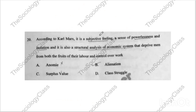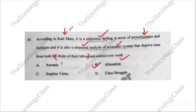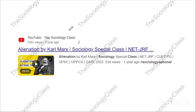Question number twenty: According to Karl Marx, it is a subjective feeling — a sense of powerlessness and isolation — and also a structural analysis of an economic system that deprives men of both the fruits of their labor and control over their work. The correct answer is alienation. These topics keep reappearing with changed language, which is why I have already made videos on important topics. A video on alienation is already available on the channel — please watch it.